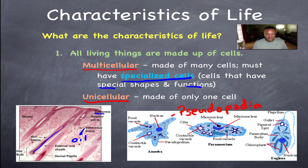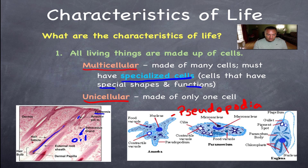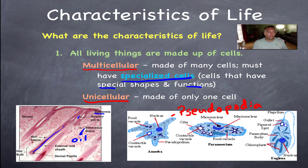The sebaceous gland produces oil that keeps your skin soft. The erector pili muscle, when it contracts, leads to goosebumps and makes the hair stand up. So in a multicellular creature, you have all these different cells that have become specialized — a very important concept.